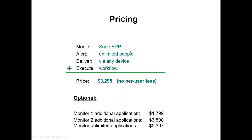If you want to define and utilize an unlimited number of events, send alerts to an unlimited number of people — not just your own employees but your customers, prospects, vendors, and suppliers — and have those alerts delivered via any device or method: email, fax, text message, dynamic web dashboard, chart or graph, plus the ability for Alerts and Workflow to go back into your Sage ERP application and trigger workflow such as putting a delinquent customer on credit hold or creating a purchase order for an item nearing its reorder level — for all of that functionality, you'd be looking at a one-time license cost of just under $3,300.